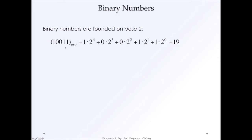How this is calculated or converted into a decimal number is that you multiply each digit by the base to the power of its position — for example, 4 here — and you essentially sum them up. The digits that are off provide zero, so we skip those. The addition of the remaining numbers together gives us an equivalent of 19 in decimal format, and this is 19 in binary format.